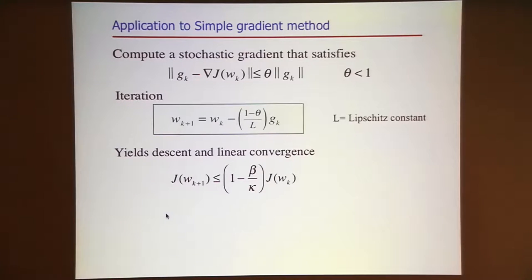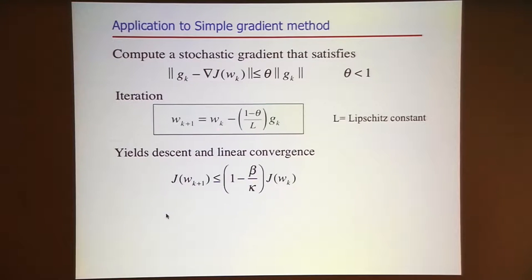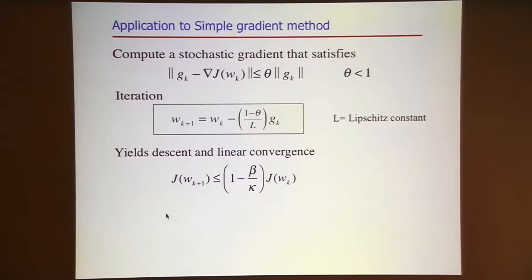Now assuming that I can satisfy that condition, let's forget about Newton methods and second order and just consider a gradient method. If I cannot do a dynamically sampled algorithm with a true gradient method, I won't be able to do it with anything. So let's try a very simple steepest descent iteration with a fixed step length—L is the Lipschitz constant—and it is known that for a convex function, steepest descent with that step length gives descent at every step and convergence.